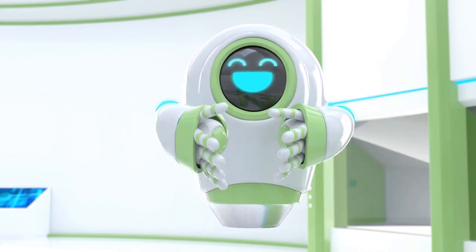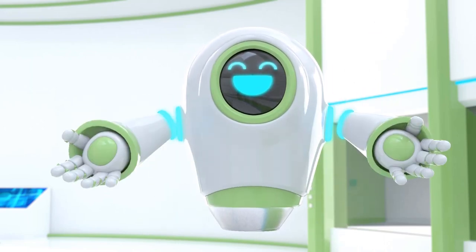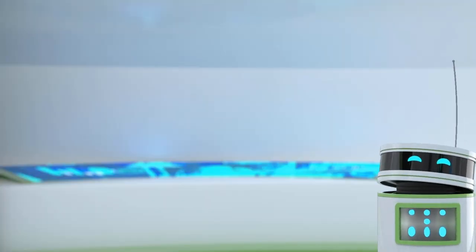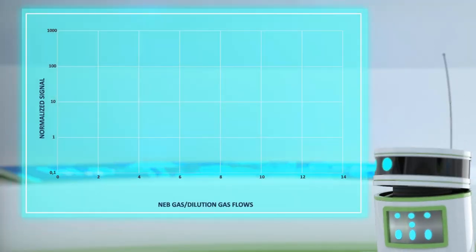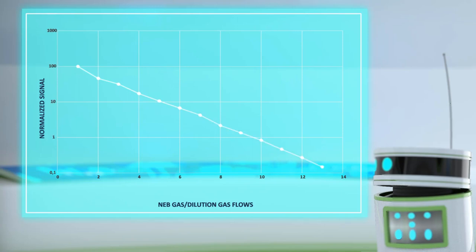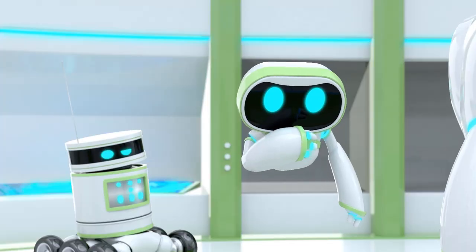The increased plasma temperature enhances ionization efficiency and reduces matrix effects. Great — I can see from this graph how AMS dramatically reduces the analyte signal.